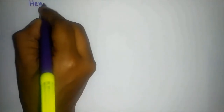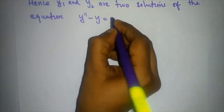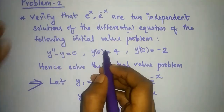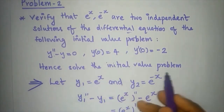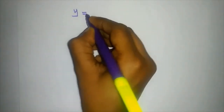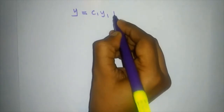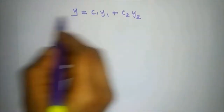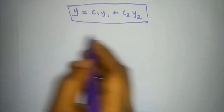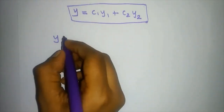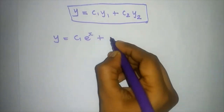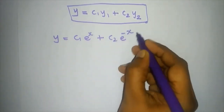So y1 and y2 equal 0 — we conclude that y1 and y2 are two solutions of the equation y'' minus y equal to 0. Hence, solve the initial value problem. The general solution is y equal to c1*y1 plus c2*y2. Here y1 = e^x and y2 = e^(-x), so y = c1*e^x plus c2*e^(-x). This is your general solution format.